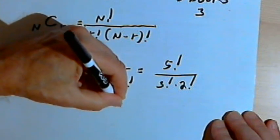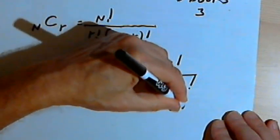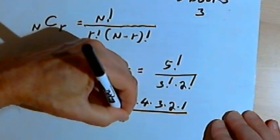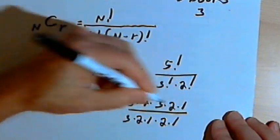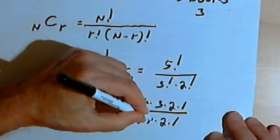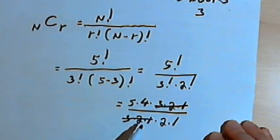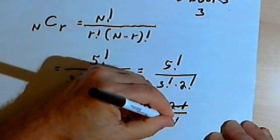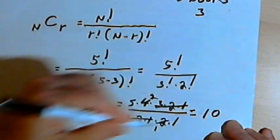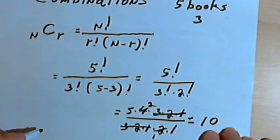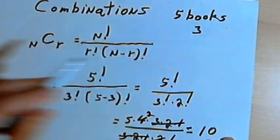And I could work that out. That would be something like 5 times 4 times 3 times 2 times 1 over 3 factorial, which is 3 times 2 times 1, times 2 factorial, which is 2 times 1. The 3, the 2, and the 1, I can cancel those in both the numerator and the denominator. I could divide the denominator by 2 and the numerator by 2, and I would get a total of 10 different combinations, 10 different 3 book combinations from a total of 5 books.